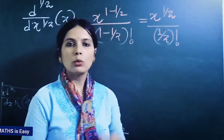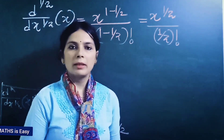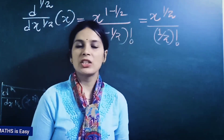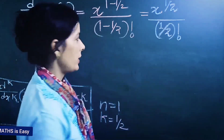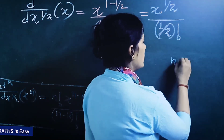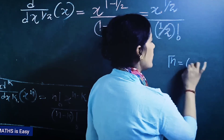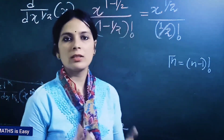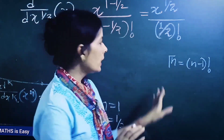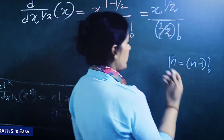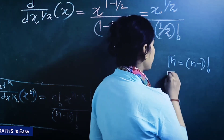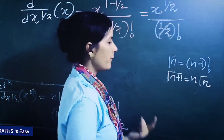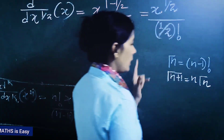Factorial can be determined only for integers, but the gamma function can be determined for fractions. So we need to convert this factorial into the gamma function. The gamma function is defined as γ(n) = (n-1)!, and the key property is γ(n+1) = n·γ(n).